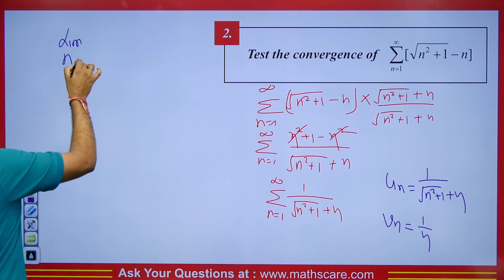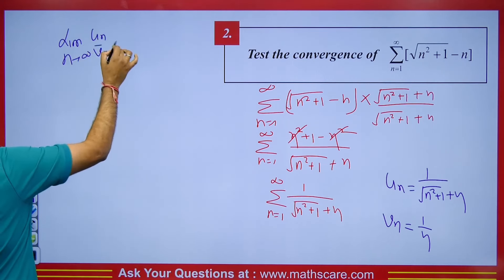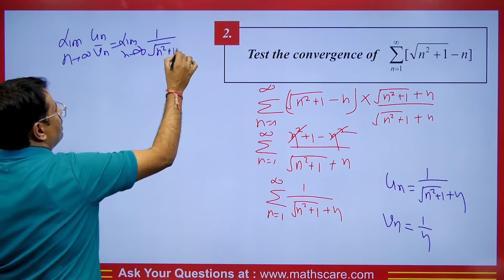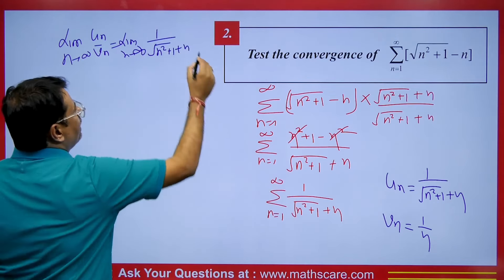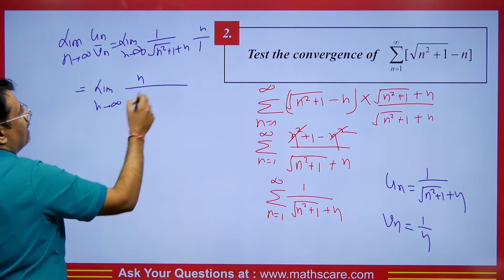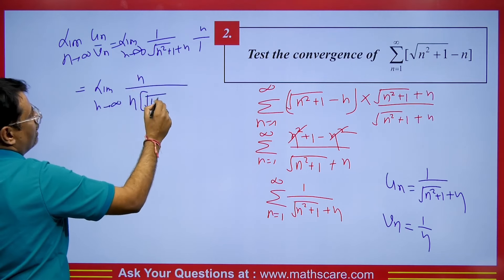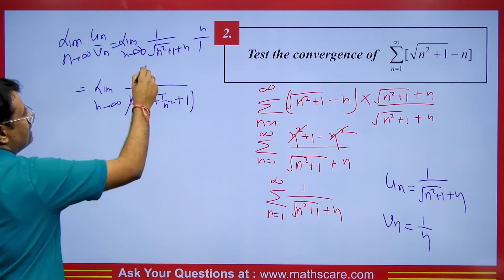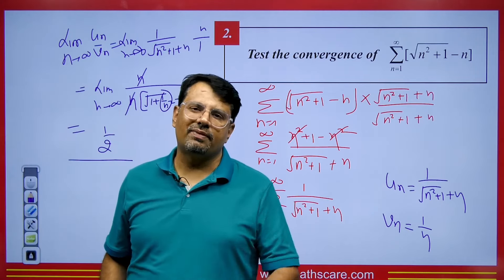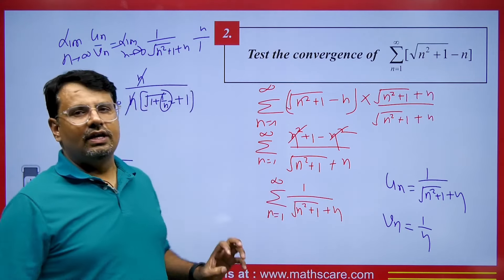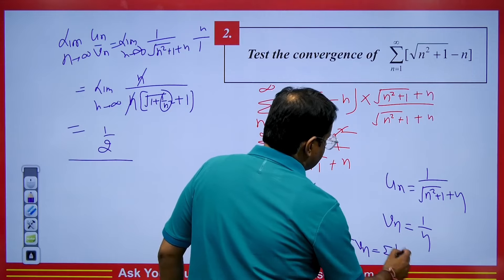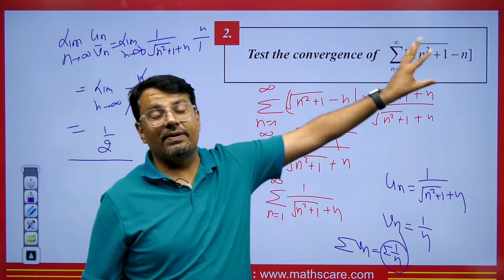Calculate limit n tends to infinity of un upon vn: 1 upon (square root of n squared plus 1 plus n) divided by 1 upon n, so n comes to the numerator. Take n as common from the denominator: n times square root of (1 plus 1 by n squared) plus n. The n terms cancel, and putting n tends to infinity gives 0, leaving 1 over (1 plus 1), which equals 1 by 2 — a finite value. Since summation of vn, which is summation of 1 upon n, is divergent by p-series, this series is also a divergent series.